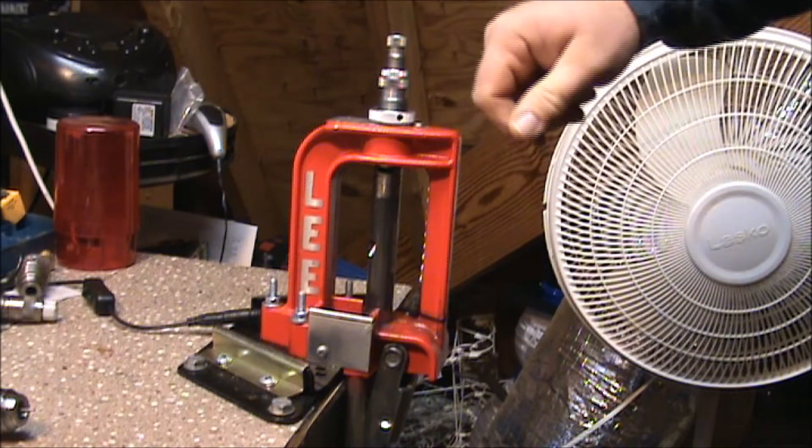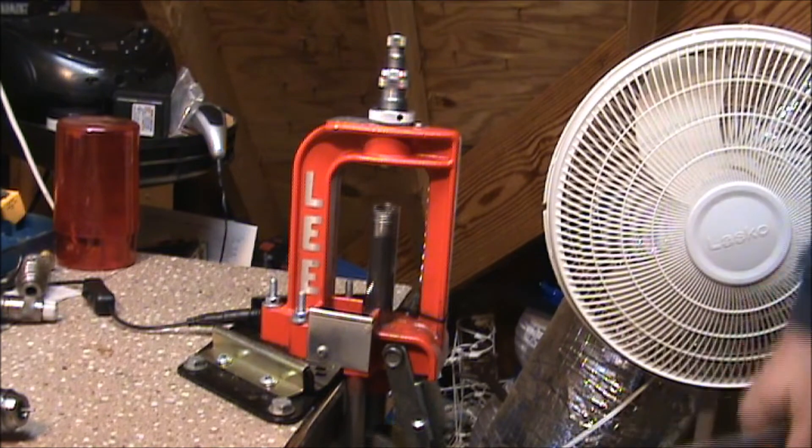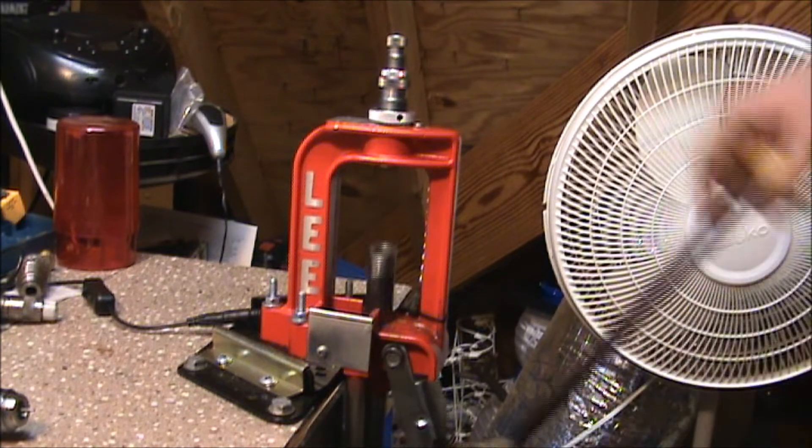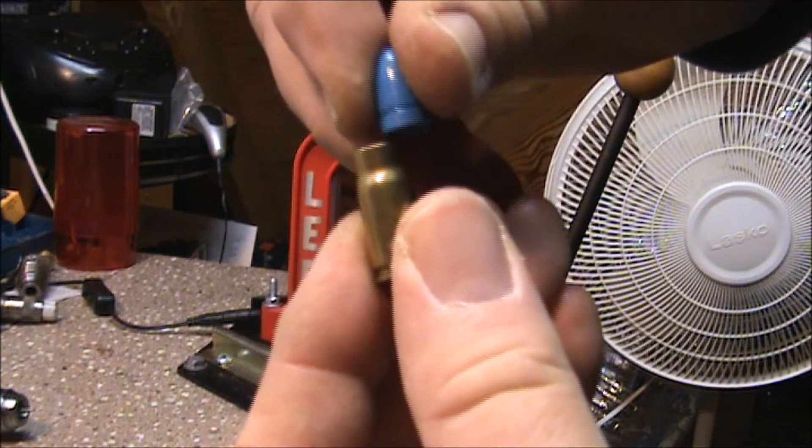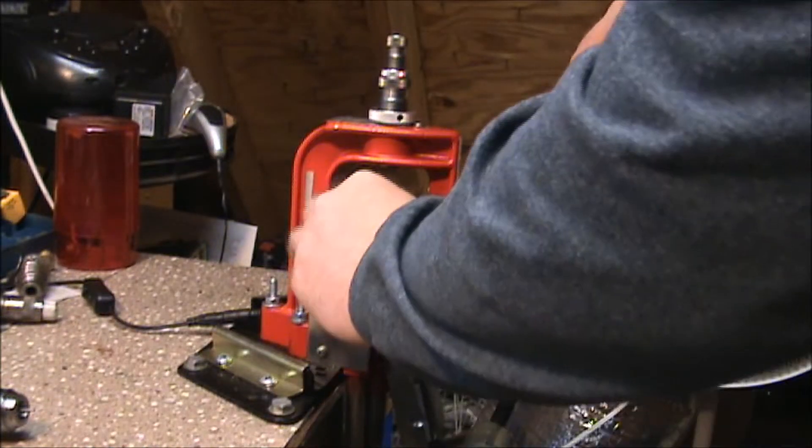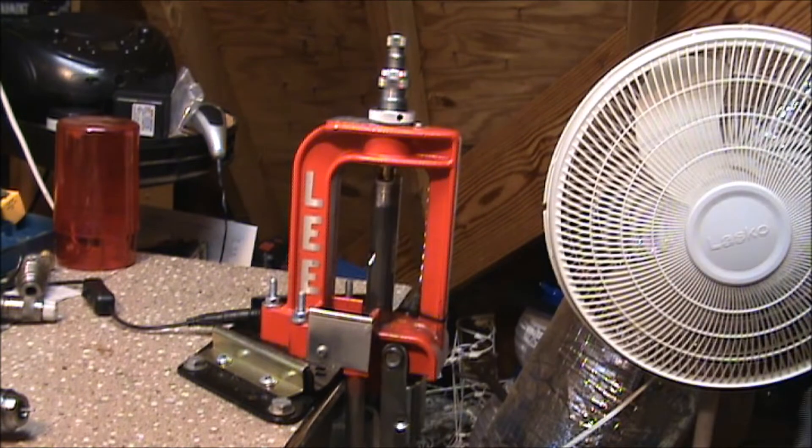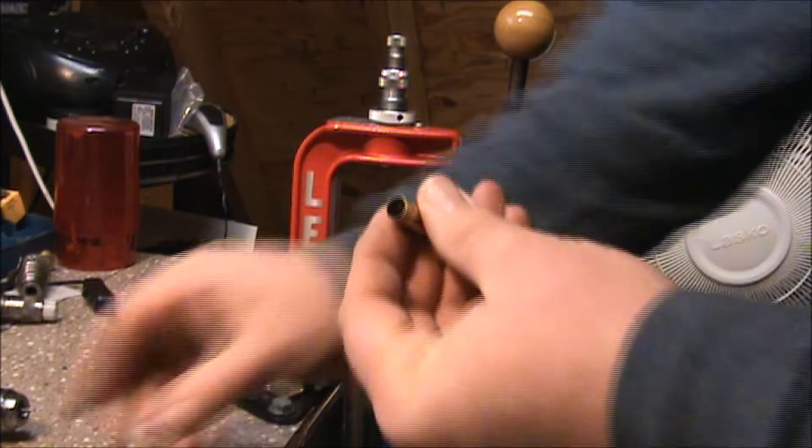You'll pull your ram down, set your die all the way down to it, and then back your handle out, give it about a quarter of a turn so you have a little bit of a cam-over action. We'll take our case like I said that won't fit, and we'll just run it up. And that actually bells the mouth of the case out.